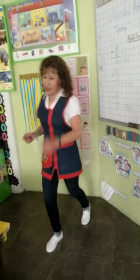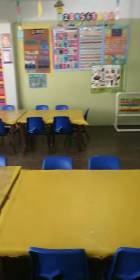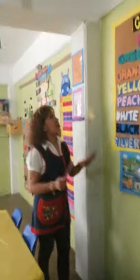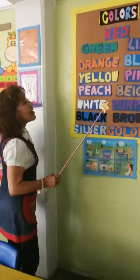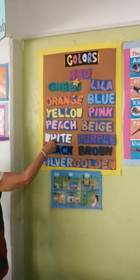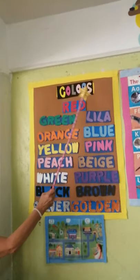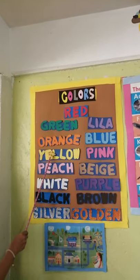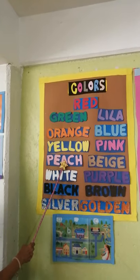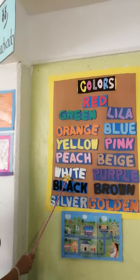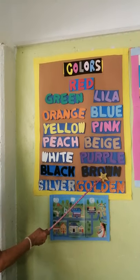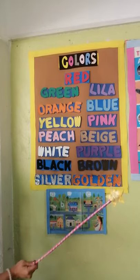Now we are going to continue with colors. You know perfectly all the colors. Everybody repeat after me — together we are going to say the colors. One, two, three: red, green, lilac, orange, blue, yellow, pink, peach, beige, white, purple, black, brown, silver, gold.